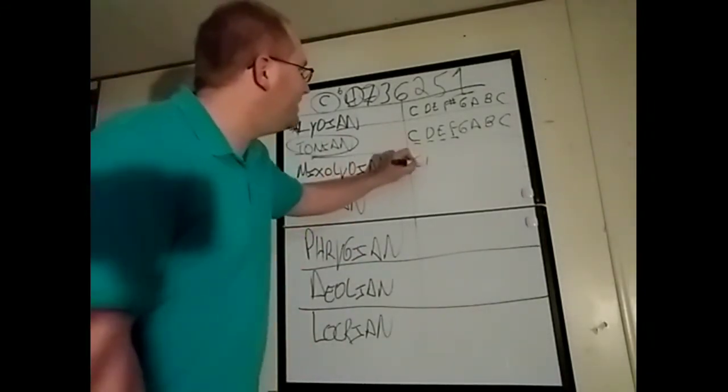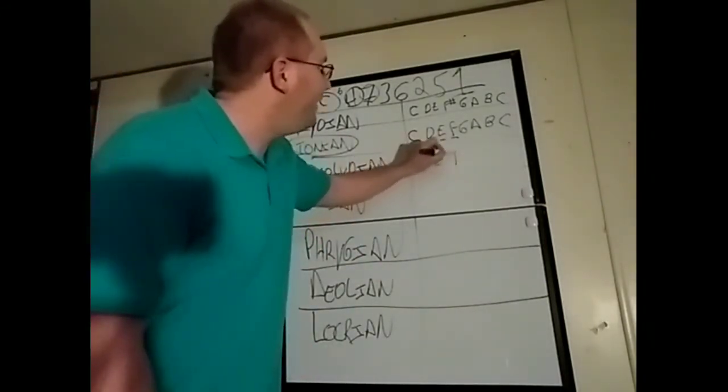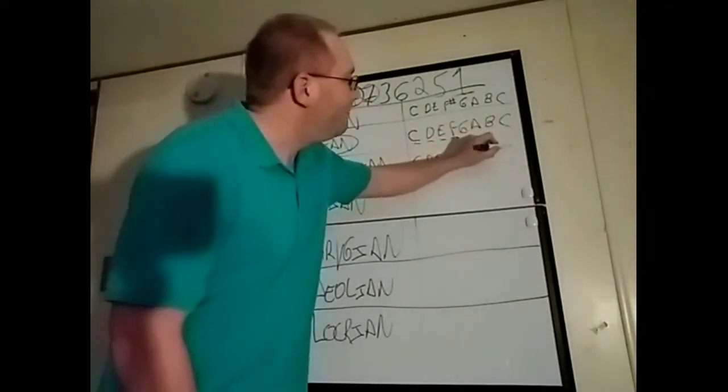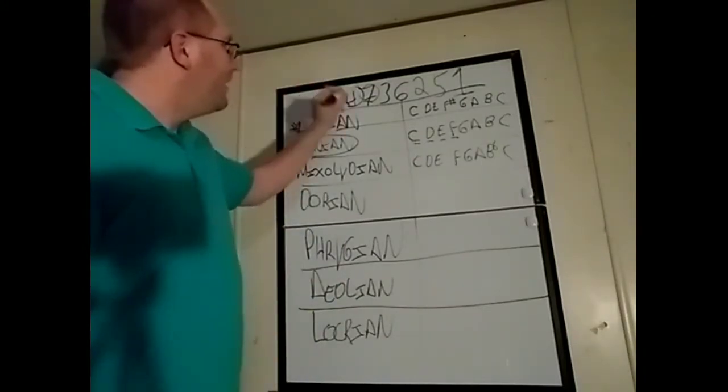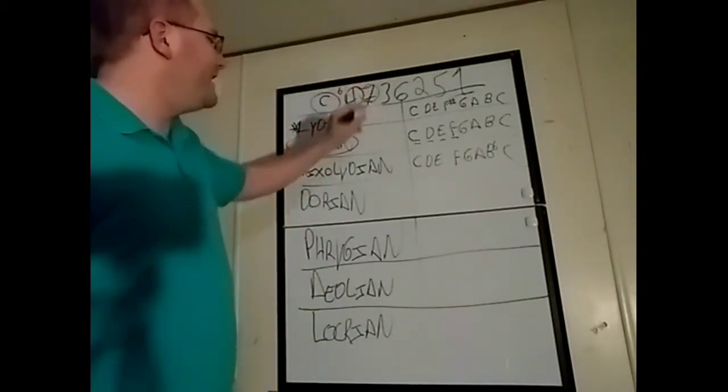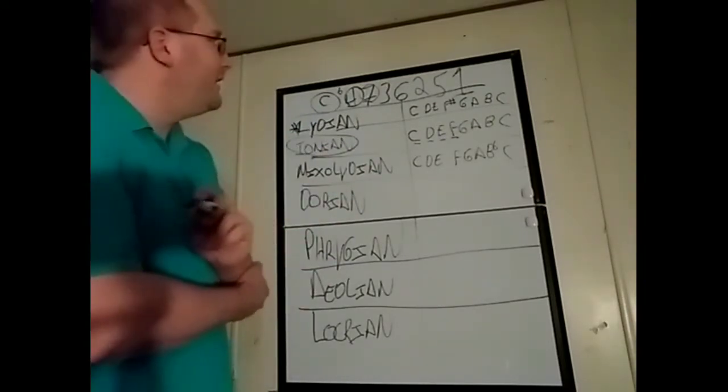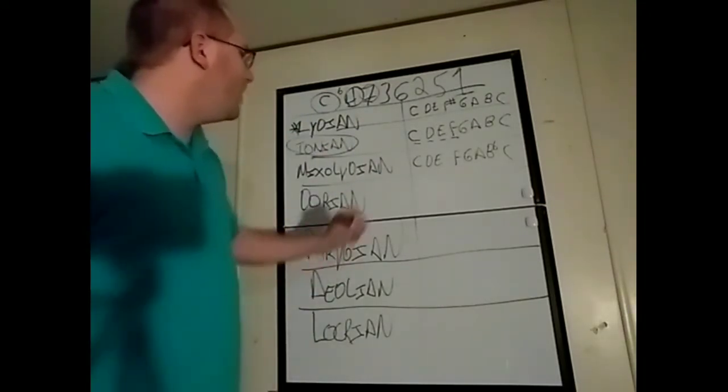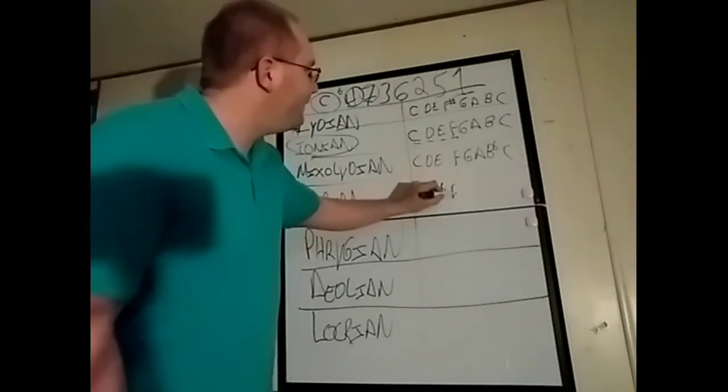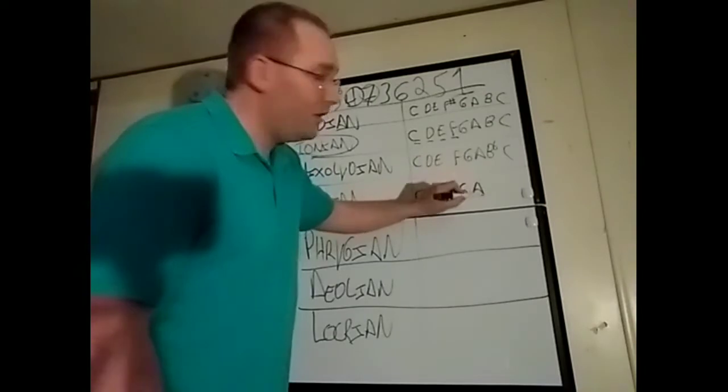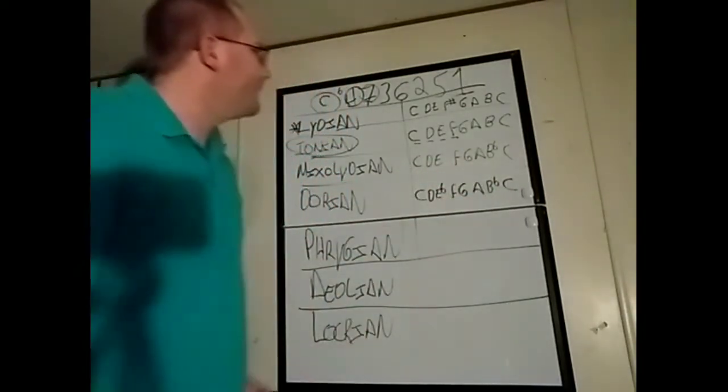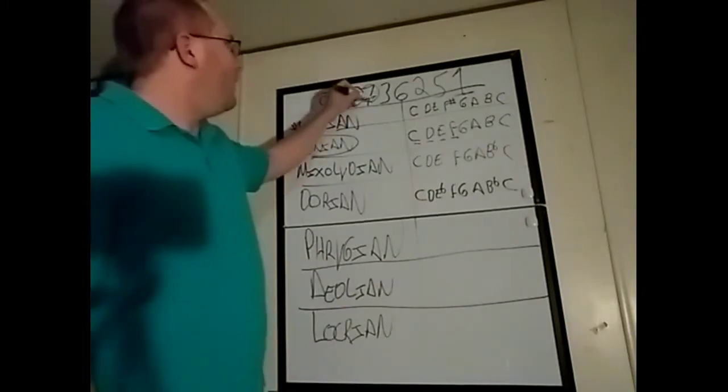So, for Mixolydian, this is what you do. You keep what you have written down in the previous scale, and then you flat that 7. So, we have C, D, E, F, G, A, B flat, back to C. So, we have C, D, E flat, F, G, A, you keep the B flat, and C. That was the 3.